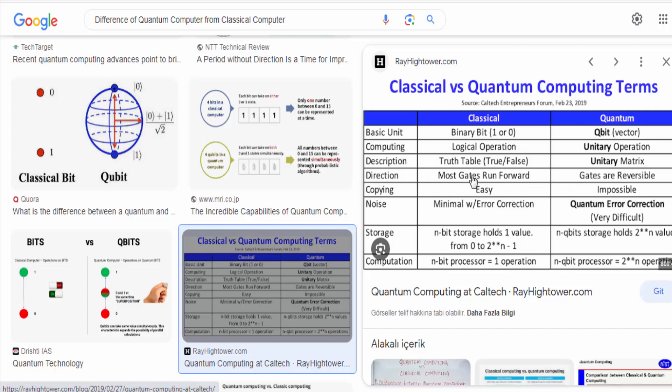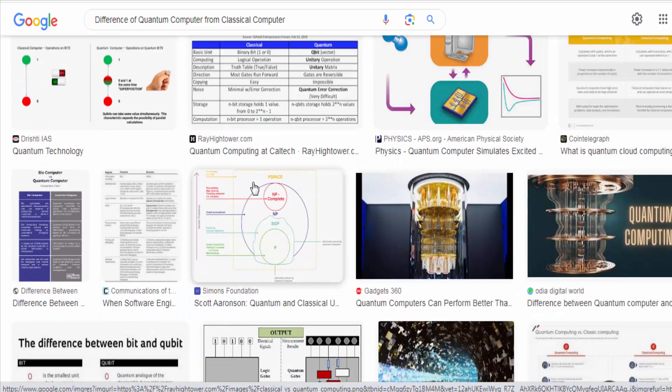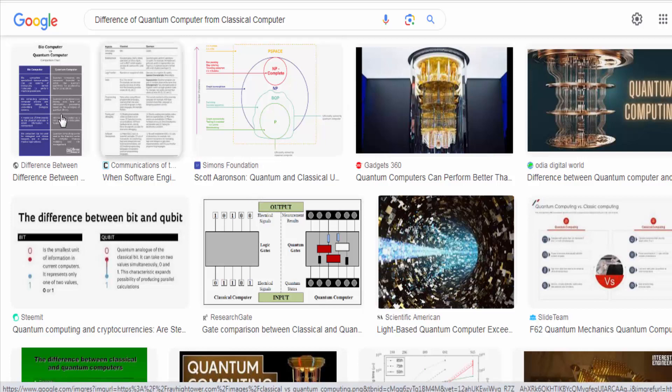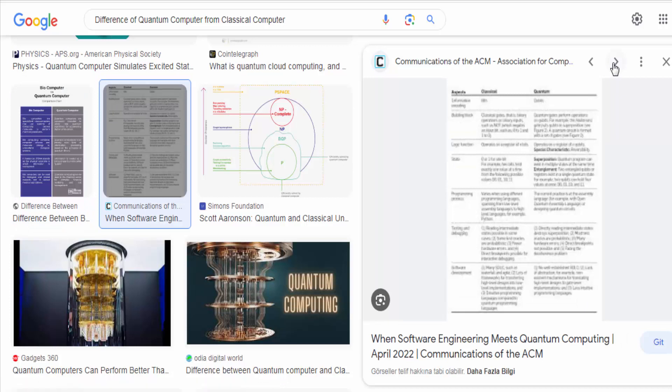Quantum gates and algorithms: While classical computers use logic gates, such as AND or OR, to manipulate bits, quantum computers use quantum gates to manipulate qubits. Quantum gates are designed to operate on superpositions and entangled states, allowing for the execution of quantum algorithms.